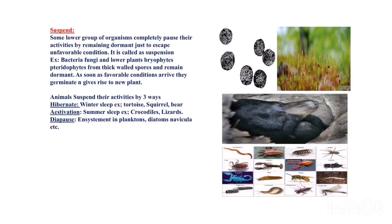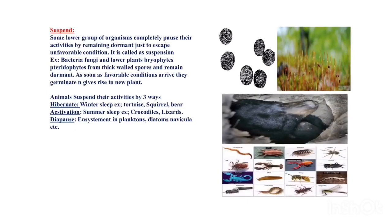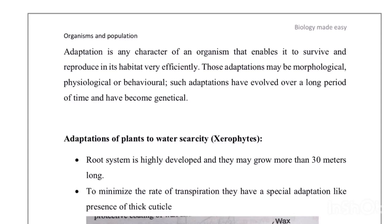Some lower groups of animals like planktons and diatoms form a thick wall — an encystment — around their body and remain dormant. This process is called encystment, and it is also called diapause.